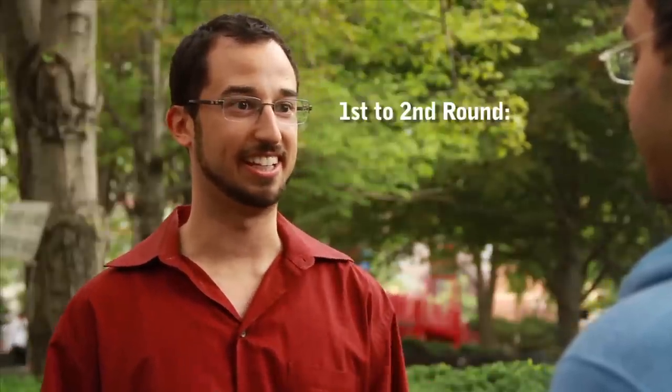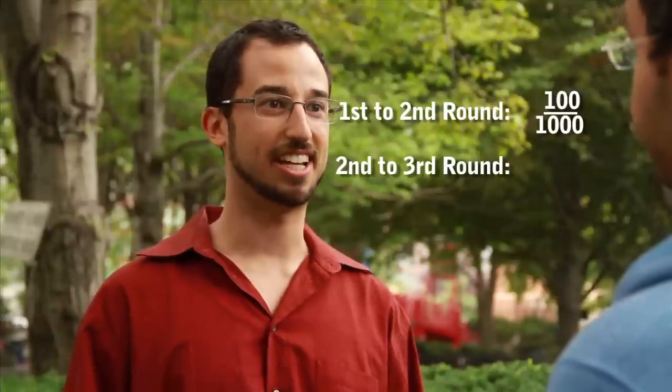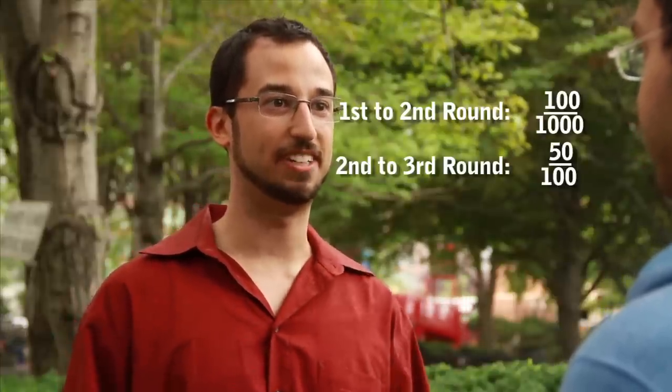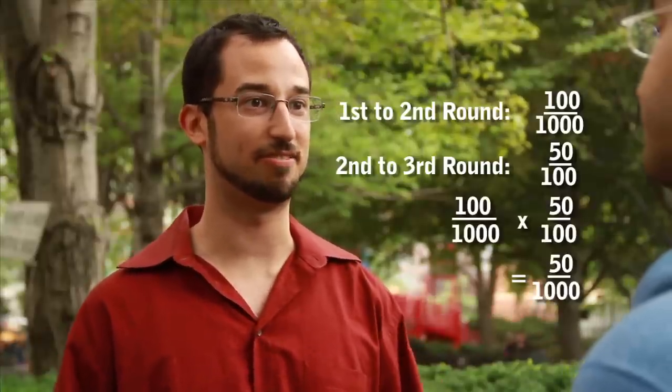Okay, so let me get this right. From the first round to the second, the odds are 100 out of 1000. And then from the second to the third, the odds are 50 out of 100. So the hundreds cancel out, leaving you 50 out of 1000 from the first to third round. Exactly. And so forth. I like that. Thanks.